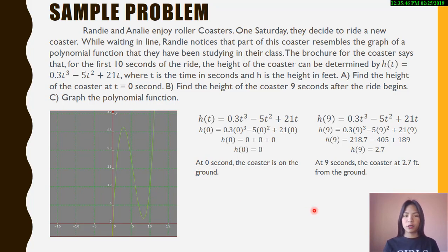In question letter B, find the height of the coaster 9 seconds after the ride begins. h(9) = 0.3(9)³ - 5(9)² + 21(9). h(9) = 0.3(729) - 5(81) + 189, which equals 218.7 - 405 + 189. h(9) = 2.7. At 9 seconds, the coaster is at 2.7 feet from the ground.